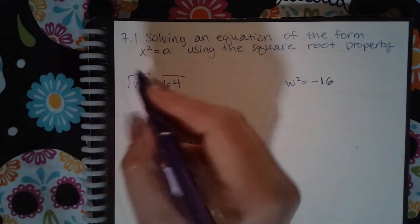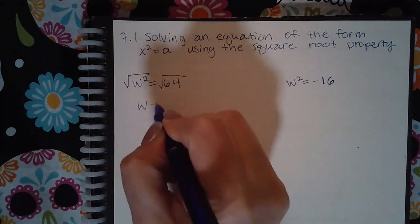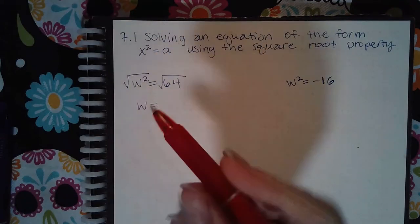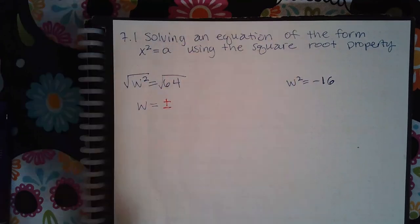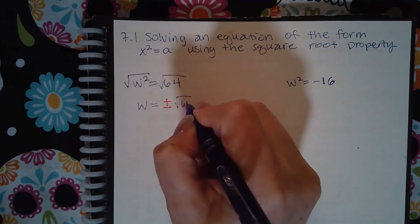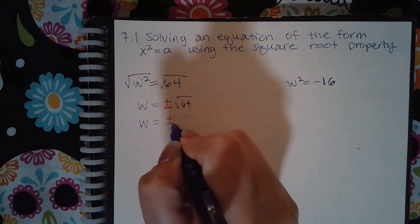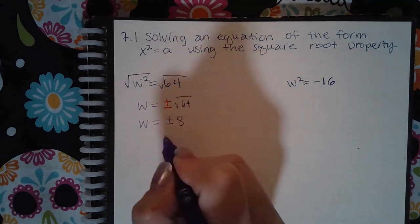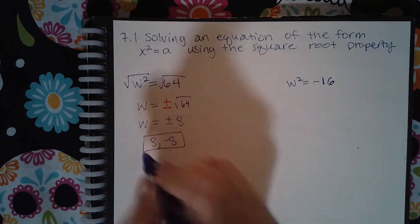the square and the square root undo each other and we get the variable w by itself. However, we also get two answers which are positive and negative the square root of 64. So the square root of 64 is 8, which means we have two solutions: 8 and -8.